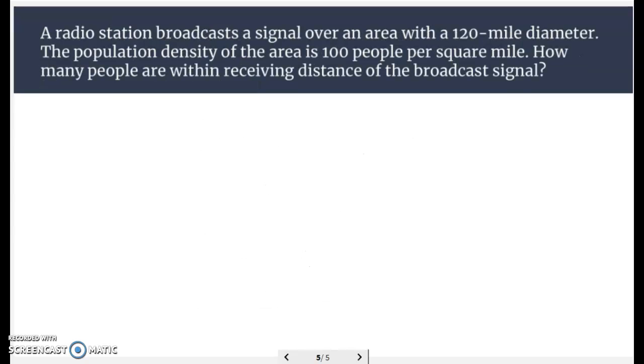Last one here. A radio station broadcasts a signal over an area with a 120-mile diameter. The population density of the area is 100 people per square mile. How many people are within the receiving distance of the broadcast signal? We'll find the area of the circle times the population density. We'll find out how many square miles there are and then multiply that times 100 because there's 100 people per square mile.